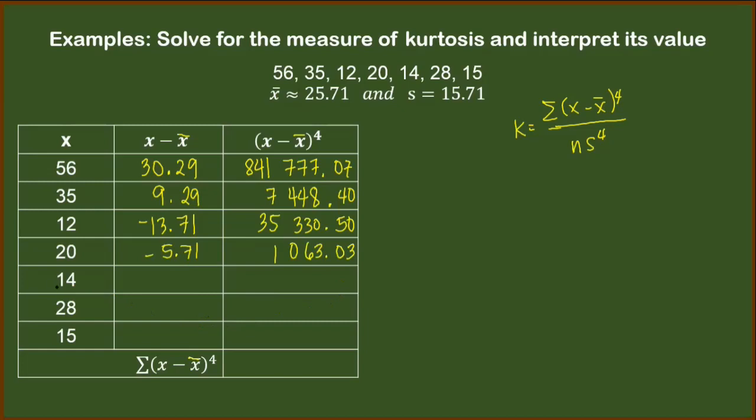Next, we have 14. 14 minus 25.71. That will give us negative 11.71. Take the 4th power of this. We have 18,803.02.